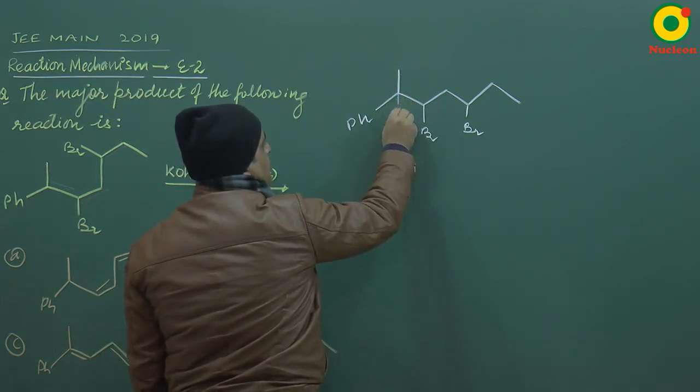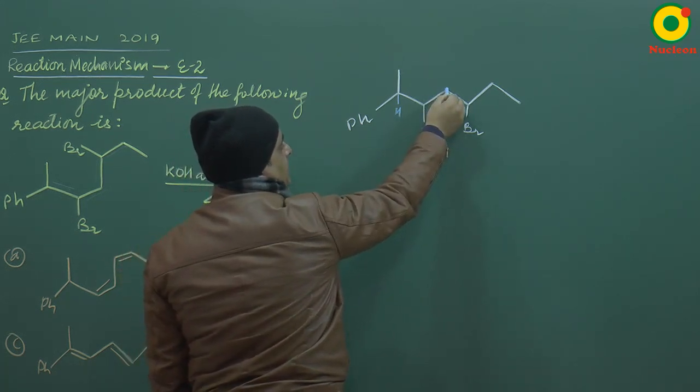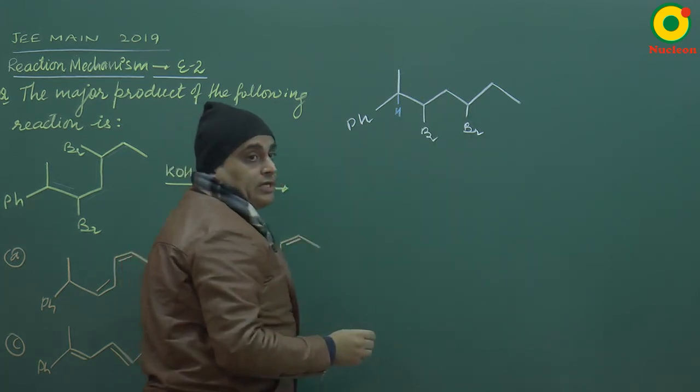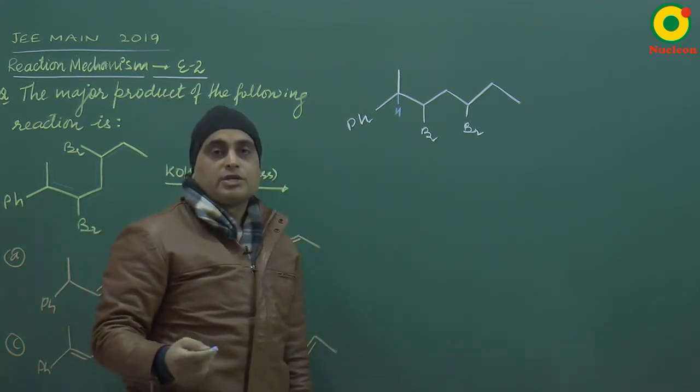Then one beta H is here. Let's look at the first bromo. One beta H is here and two beta H is here. But you know that E2 reaction follows the Saytzeff rule and becomes more stable product.